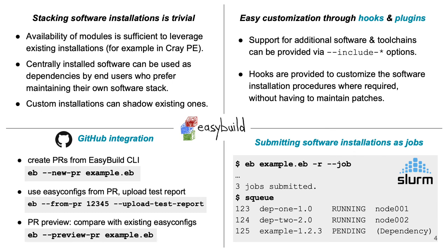On this slide I want to highlight a couple of the features that EasyBuild provides. First of all, it makes stacking software installations that are located in different places on the system very easy. This enables researchers to install their own small software stack on top of what is already installed centrally on the system. It also allows leveraging vendor-provided installations, like you get in a Cray programming environment for example. You can customize EasyBuild in a number of ways — through hooks you can make sure specific software packages are configured in a particular way. Thanks to the plugin-like system that EasyBuild supports, it is very simple to add support for additional software packages without having to maintain patches to the EasyBuild codebase. One particularly cool aspect of EasyBuild is the integration with GitHub — you can create pull requests straight from the EasyBuild command line without having to deal with Git or the GitHub web interface. You can also test contributions by pulling in changes from a pull request and even report back the results, all directly from the EasyBuild command line.